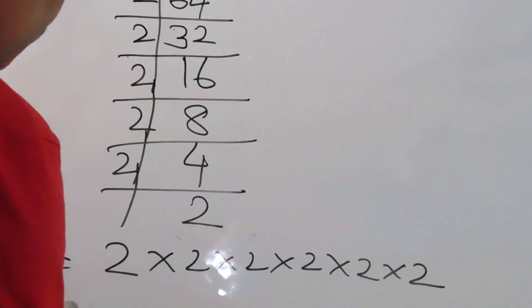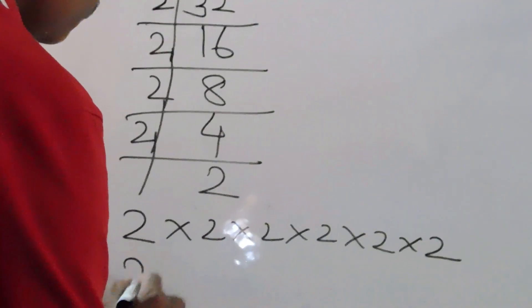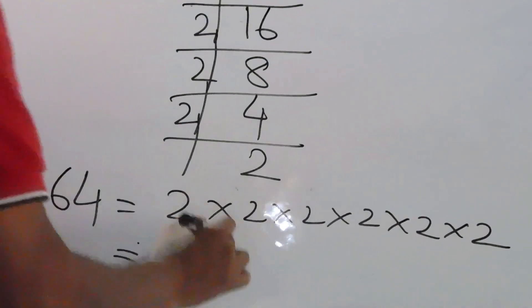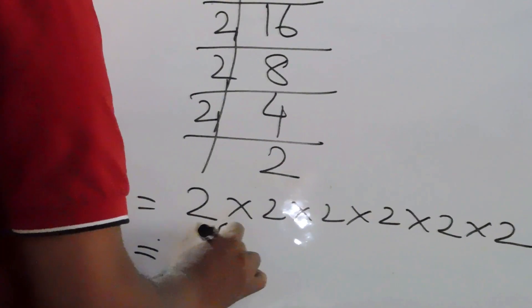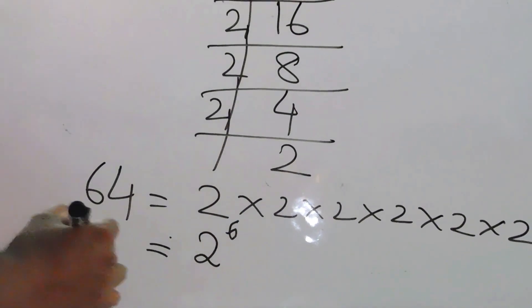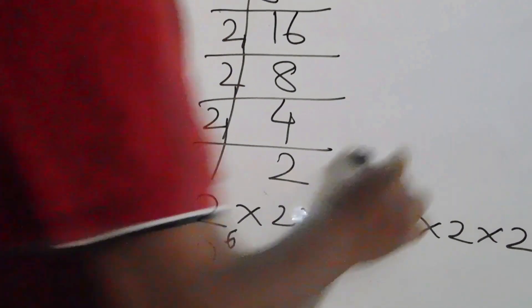So in the exponential form, how many 2s are there? 6. So the answer is 2 to the power 6. Now, coming to question number B.